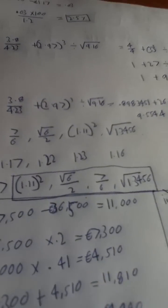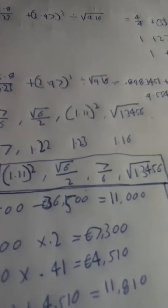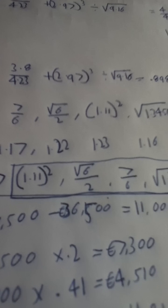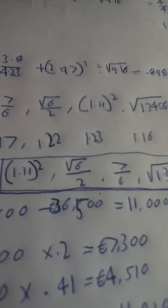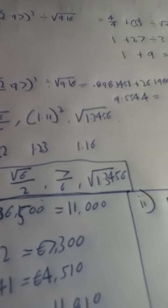Then the next one you are asked to put the largest number first. So by using your calculator you can see that 1.11 squared is the largest. Root 6 over 2 is the second largest. 7 over 6 is the third and root 1.3456 is the fourth.